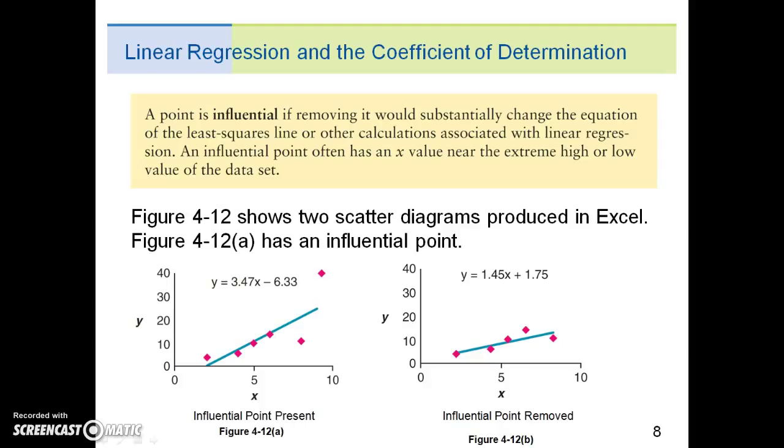Figure 4-12 shows two scatter diagrams produced in Excel. Figure 4-12a, the graph on the left, has an influential point, and we can see that as an extreme that's above the rest. So the graph on the left has the influential point present, and the graph on the right has the influential point removed. And you can visually see how the slope of the line is impacted by that change.